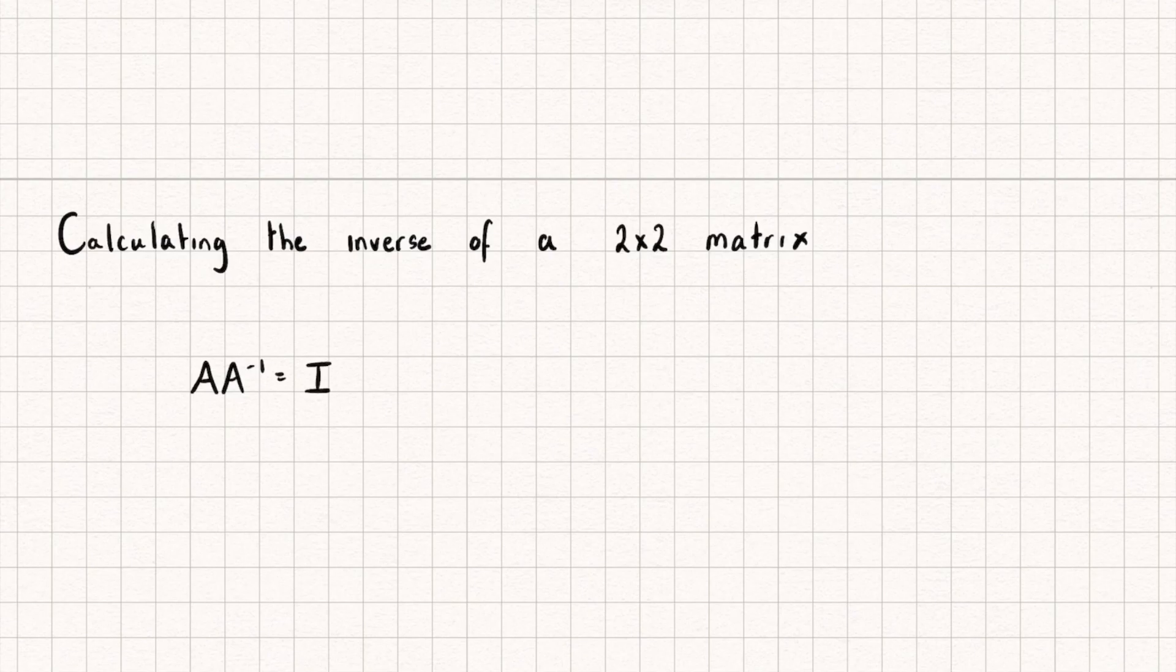Now, this is commutative, so we could actually have A inverse multiplied by A, and this will still result in the identity.